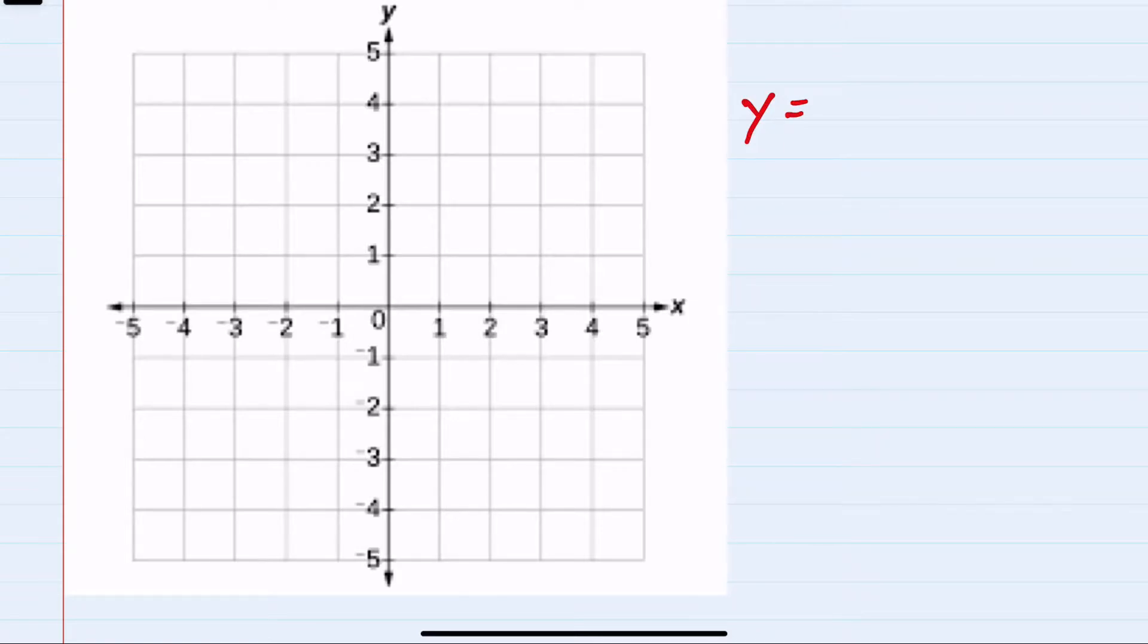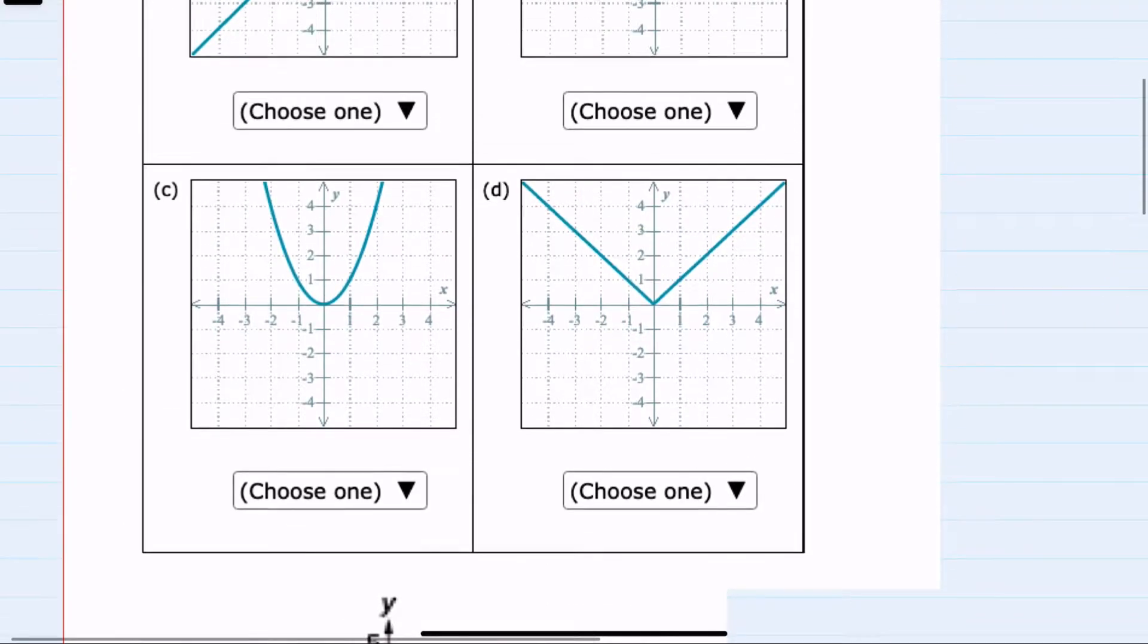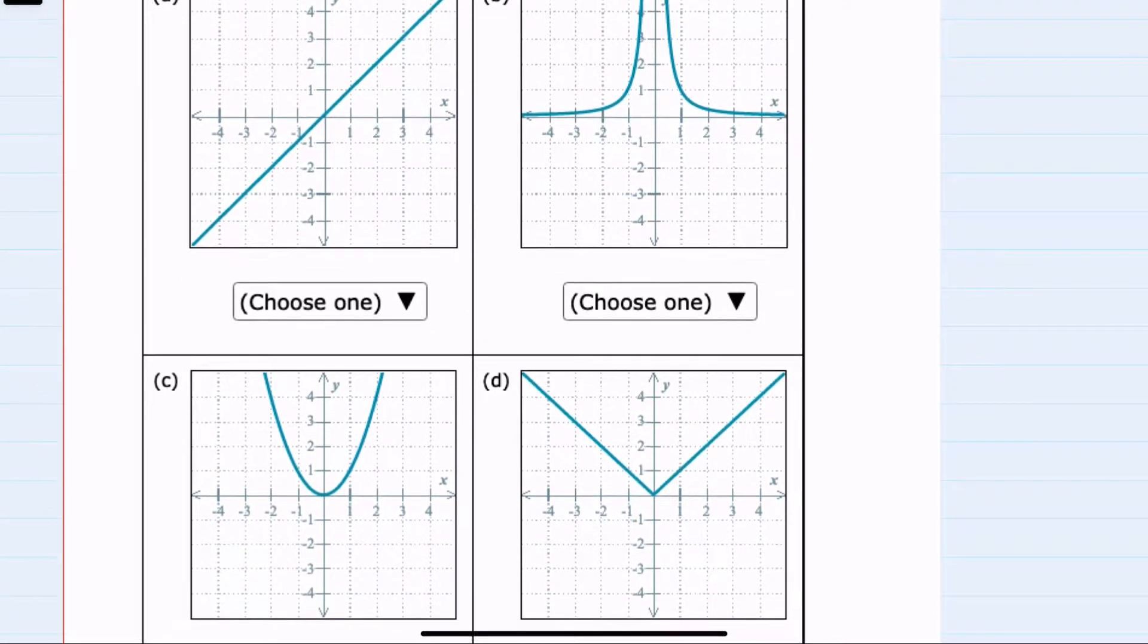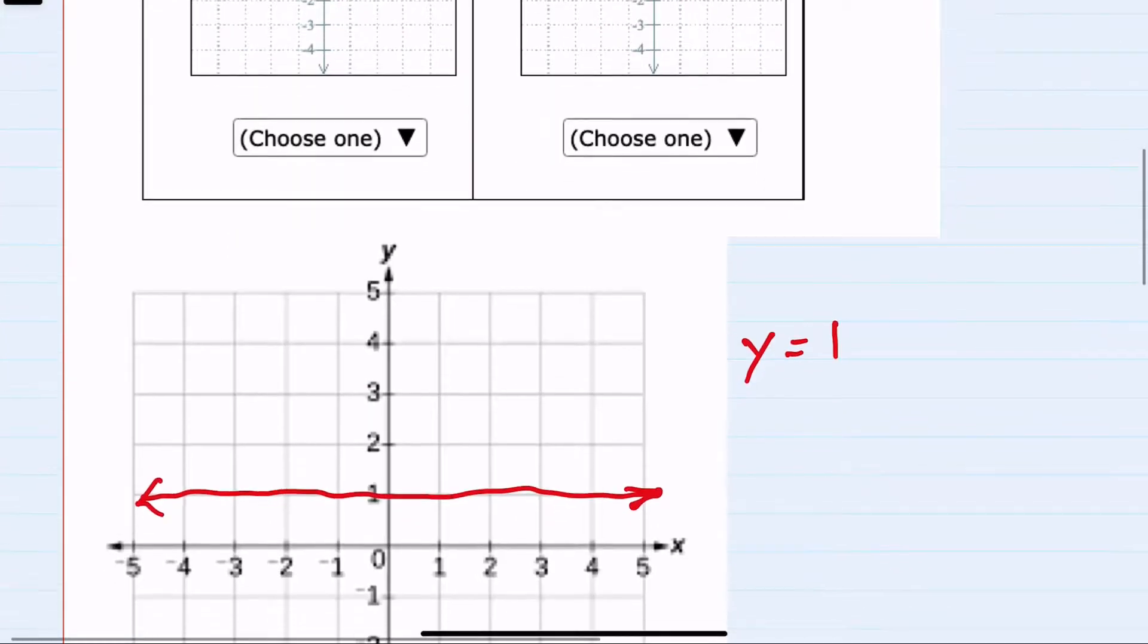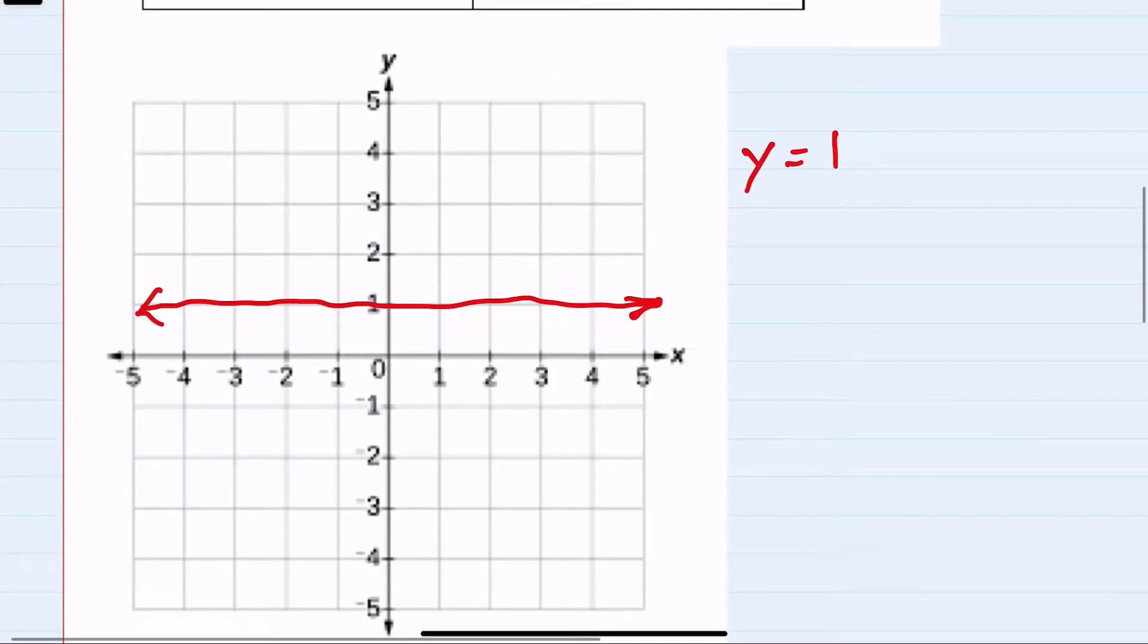The simplest version would be y equals 1. That would be a horizontal line through y equals 1. Looking back at my four examples, none of these are a horizontal line, so we do not have this parent function.